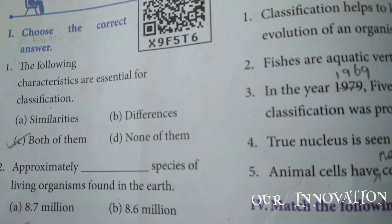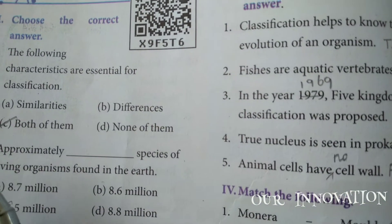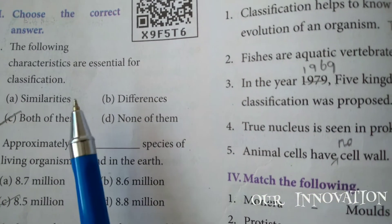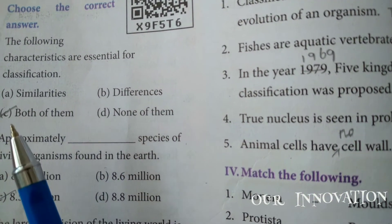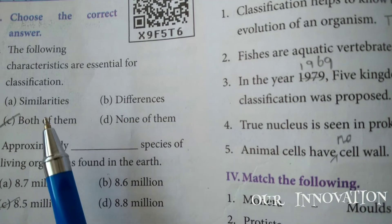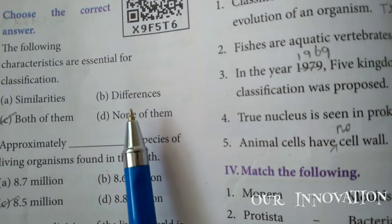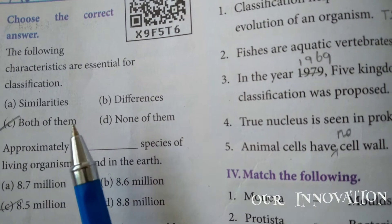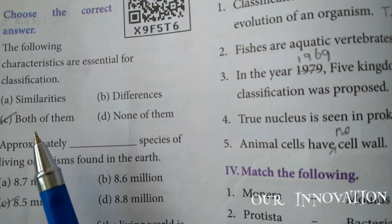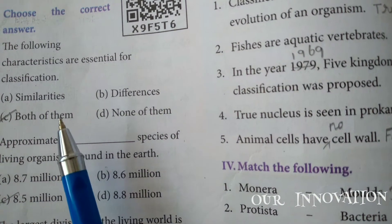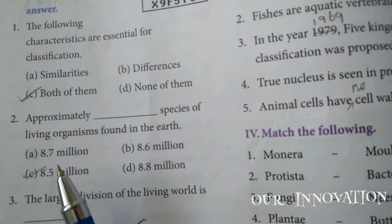Now Book Evaluation. Roman numeral one: choose the correct answer. The following characteristics are essential for classification. What is essential - similarities or differences? Both are essential. So answer C is the answer - both similarities and differences.